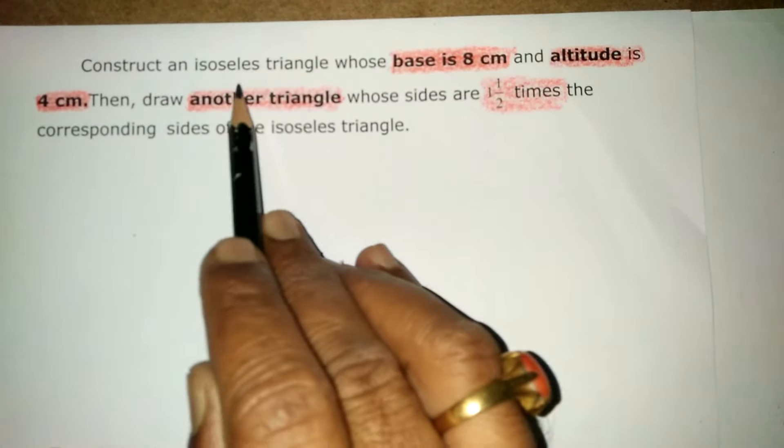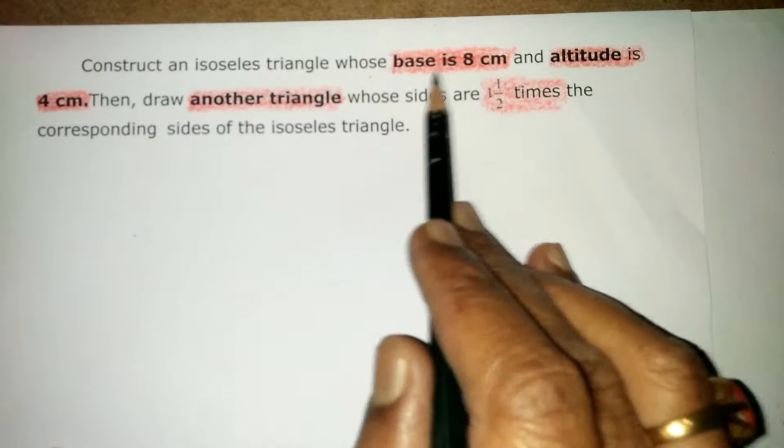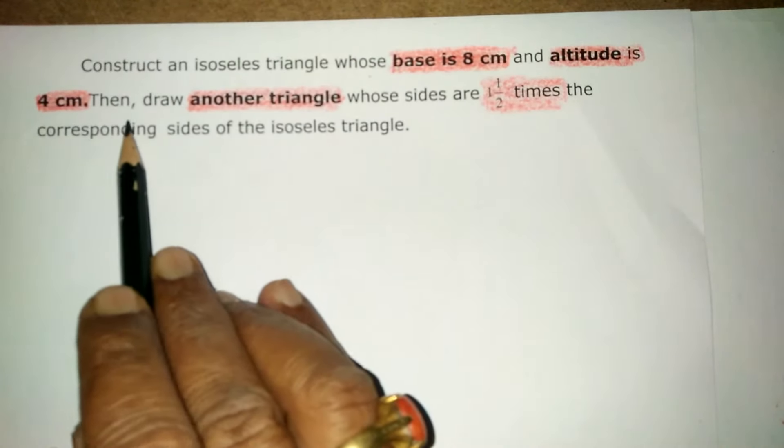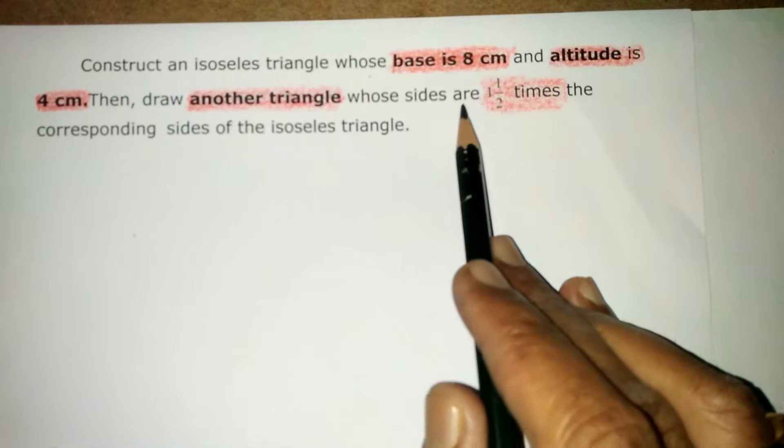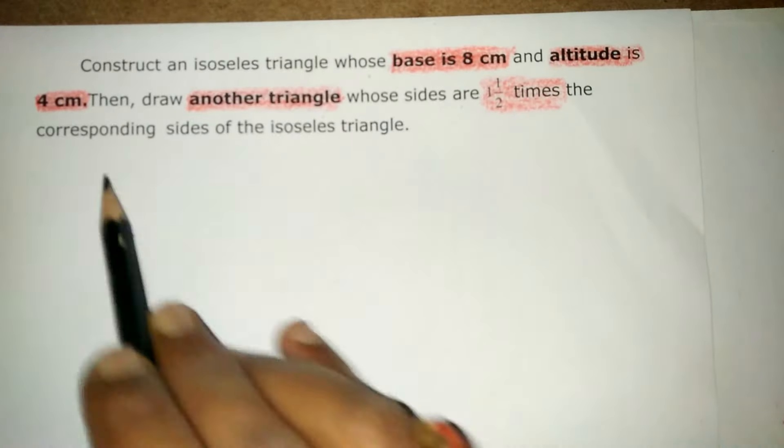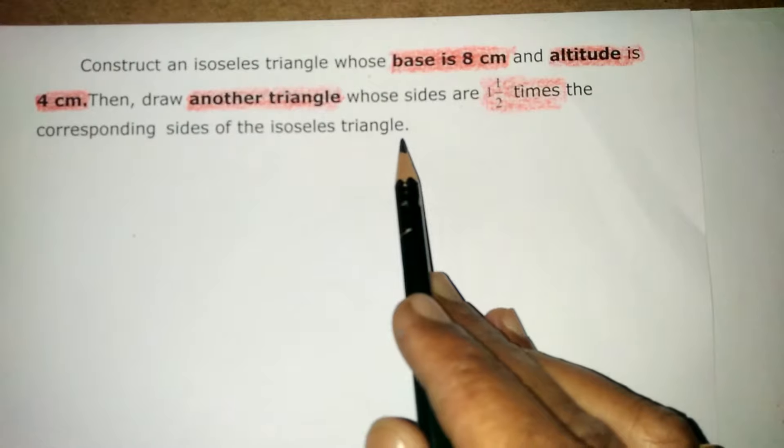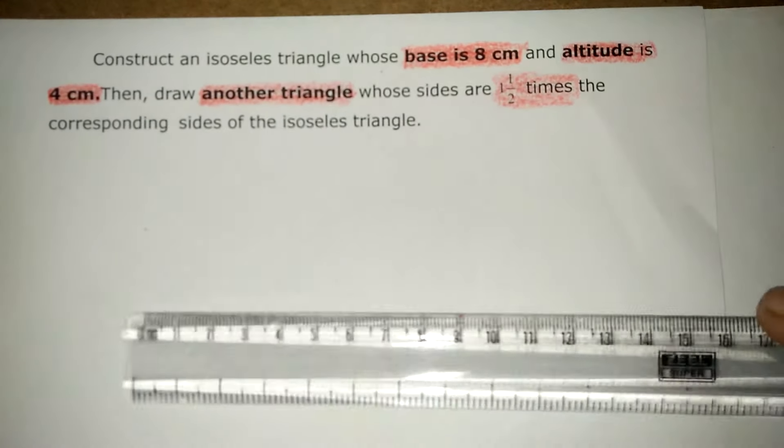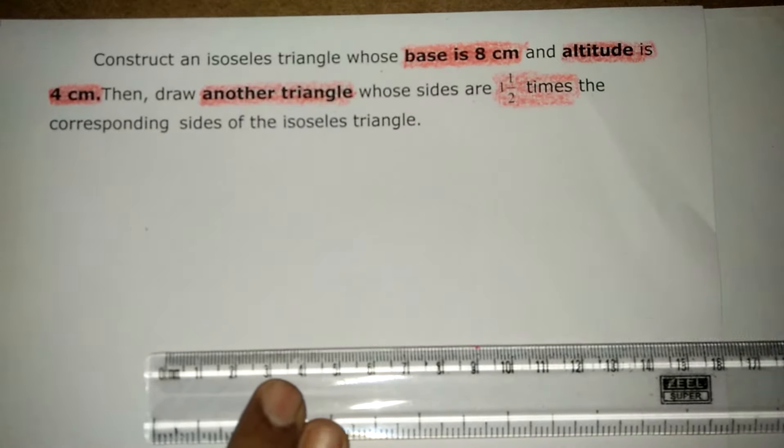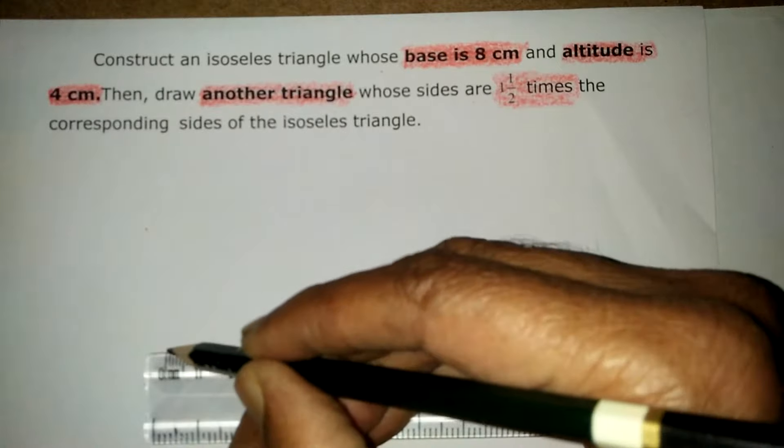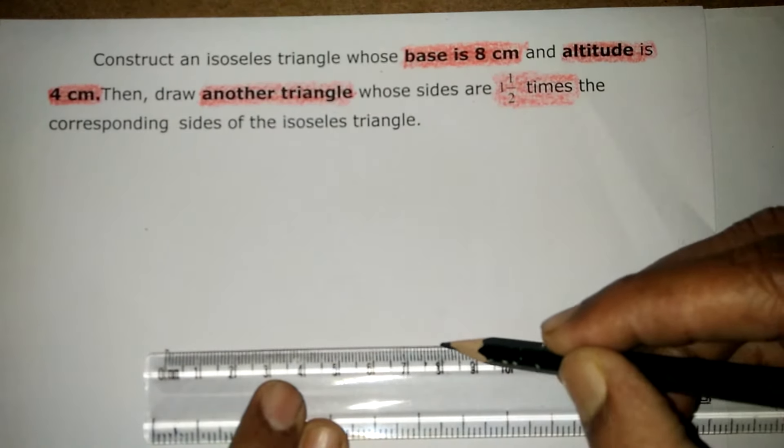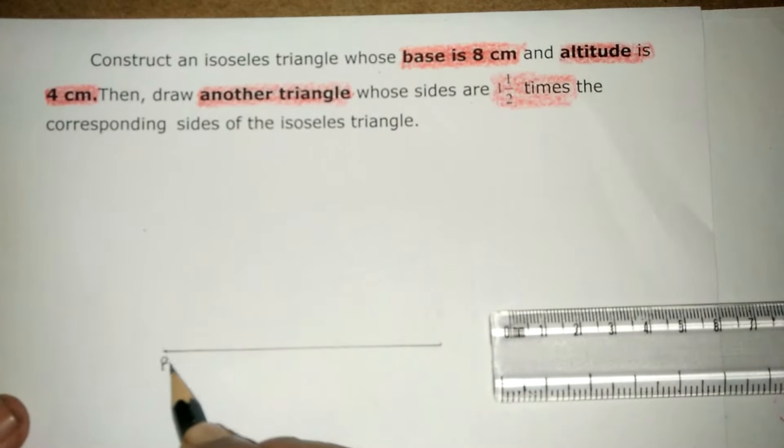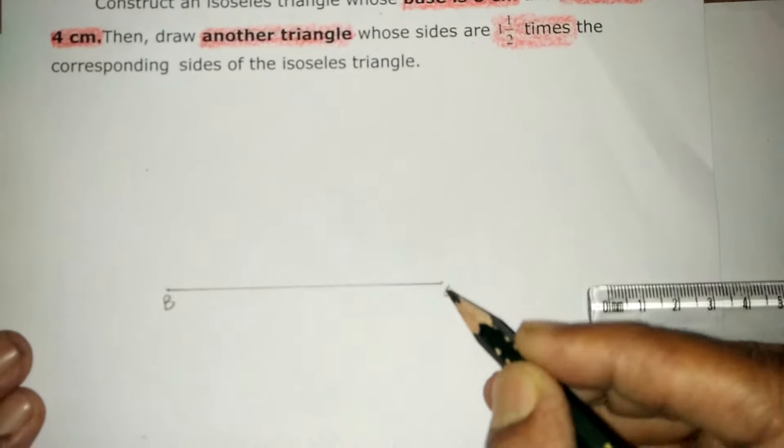Construct an isosceles triangle whose base is 8 cm and altitude is 4 cm. Then draw another triangle whose sides are 1.5 times the corresponding sides of the isosceles triangle. First take the base 8 cm and draw it. So name it as BC 8 cm.